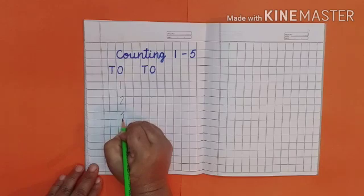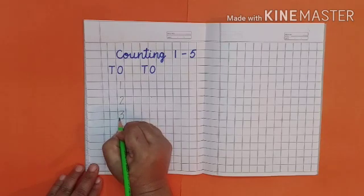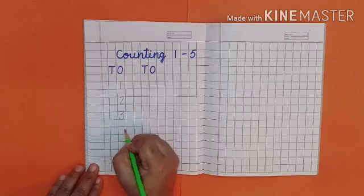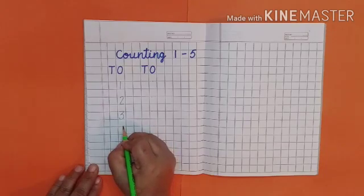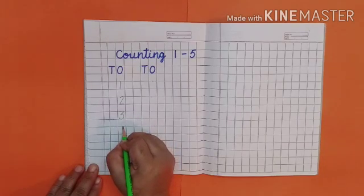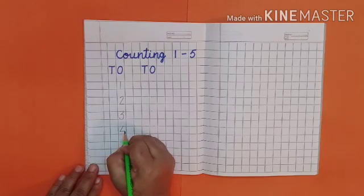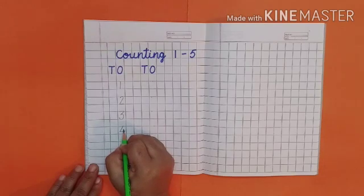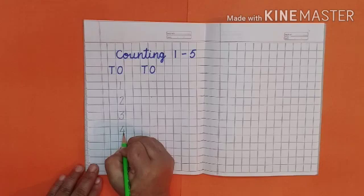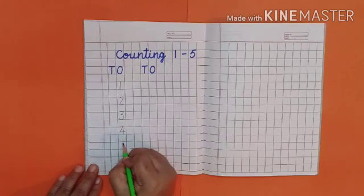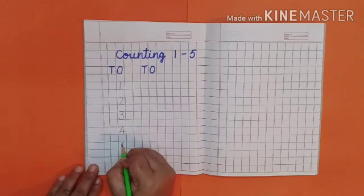Touch the bottom line like this. Next number is four. Keep pencil on dot. Make the slant line, then the sleeping line. Now lift pencil and make standing line just below top line like this.